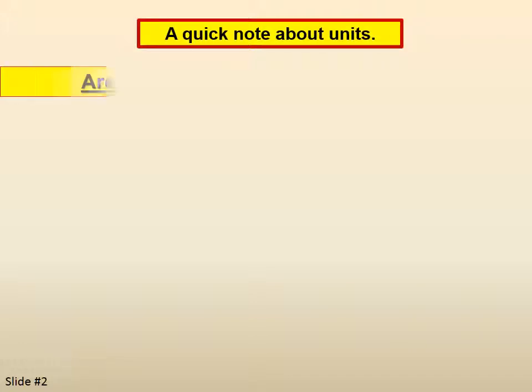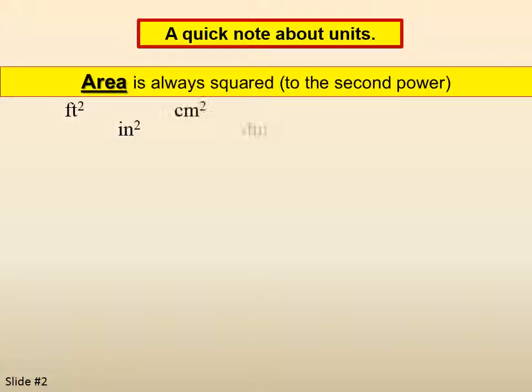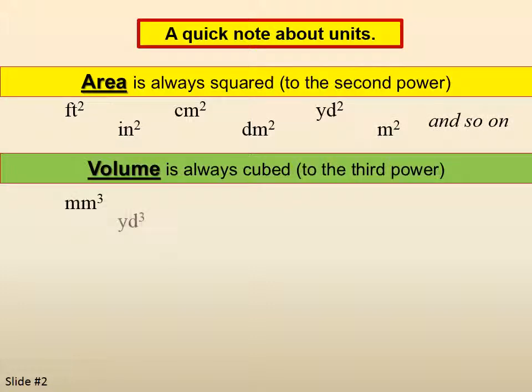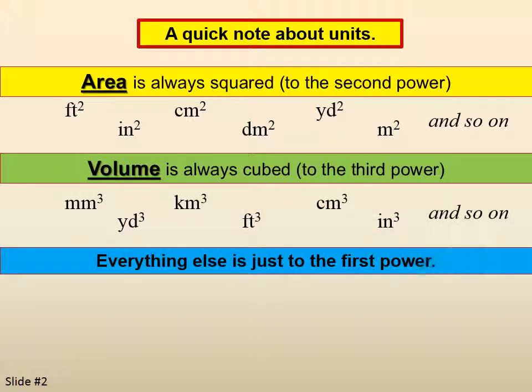A quick note about units. Area is always squared to the second power, so feet squared, inches squared, centimeters squared, and so on. Volume is always cubed or to the third power. Everything else is just to the first power.